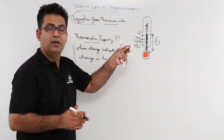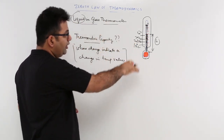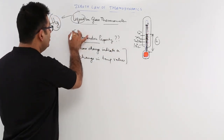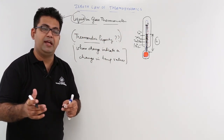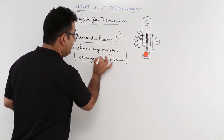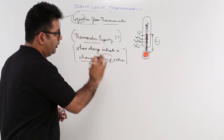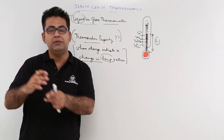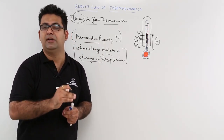This is how temperatures are measured in a liquid-in-glass thermometer, also known as a mercury-in-glass thermometer. You need to keep in mind that a change in the thermometric property indicates a change in the temperature value. Now, after discussing the mercury-in-glass thermometer and its thermometric property, let us move on to the next kind of thermometer, which is a constant volume gas thermometer.